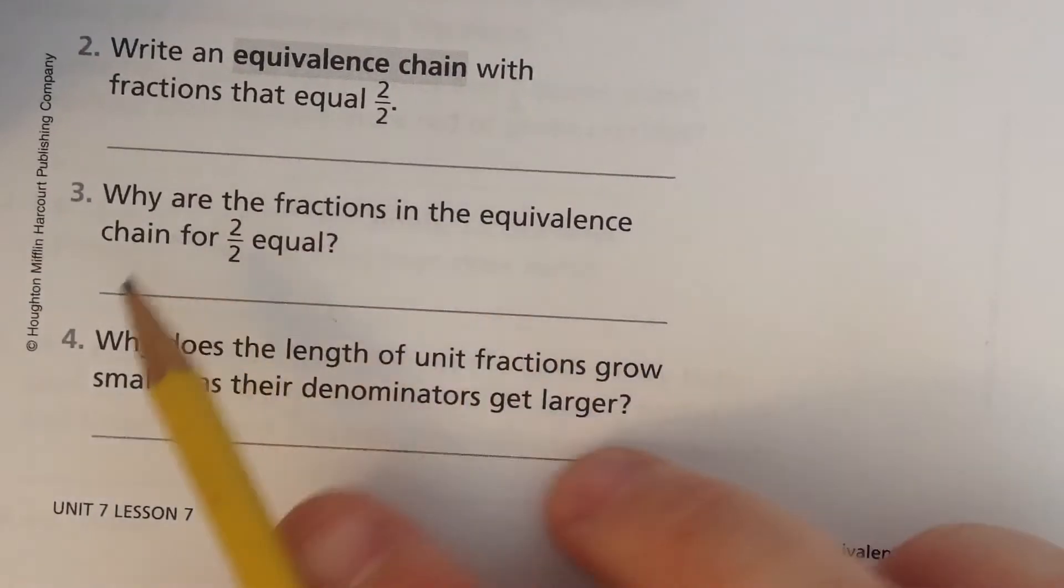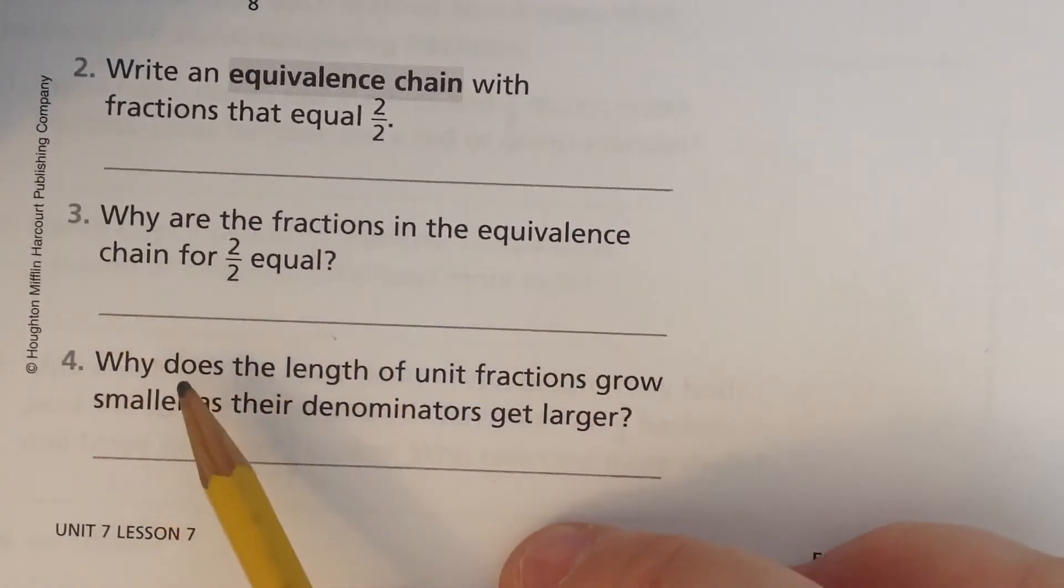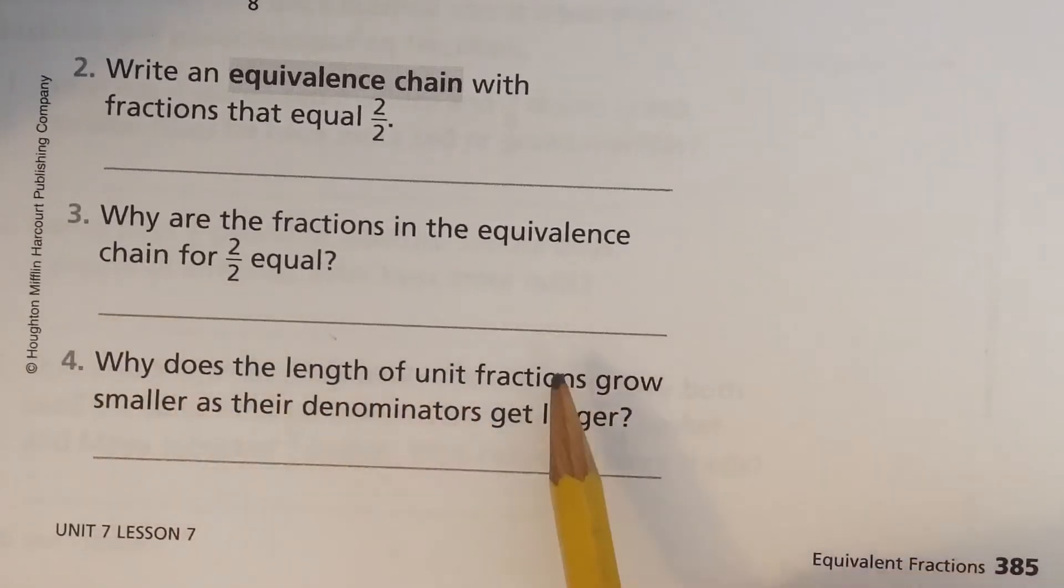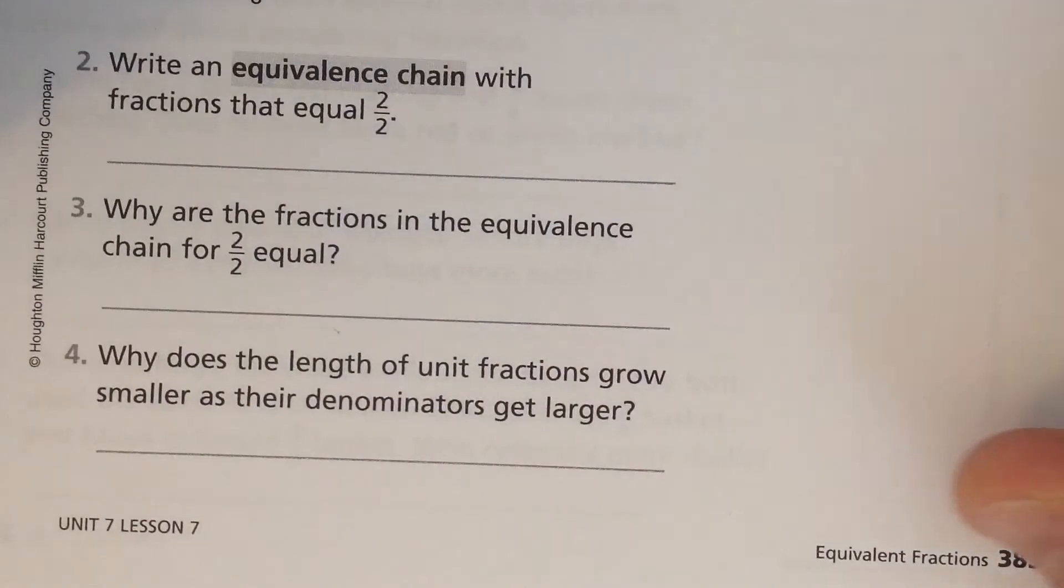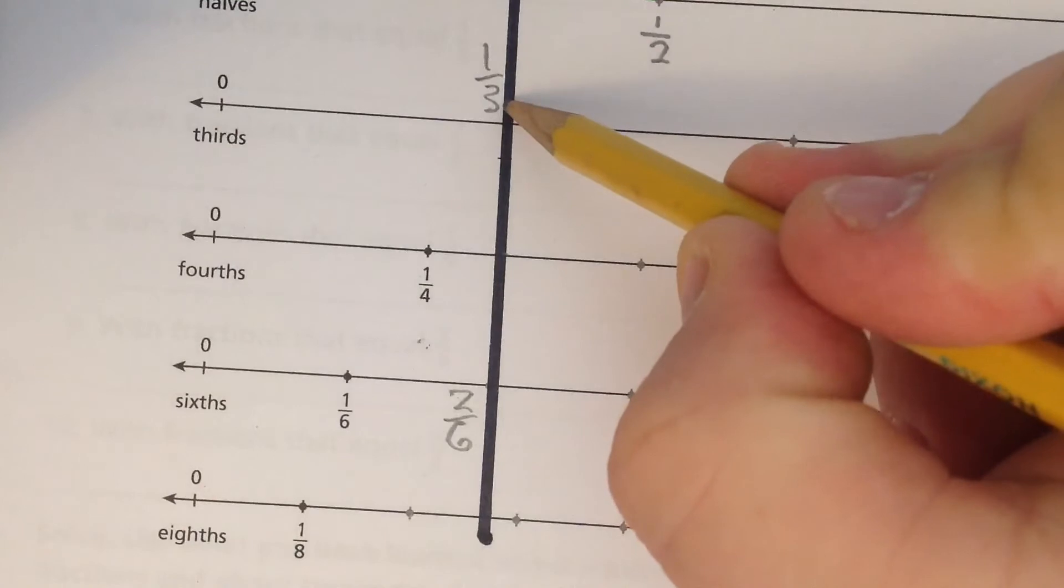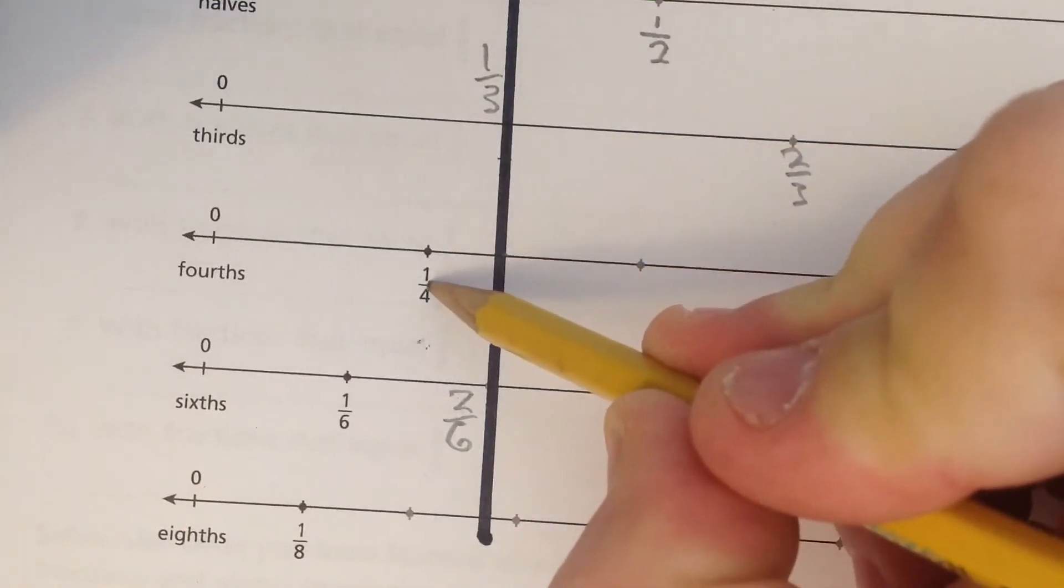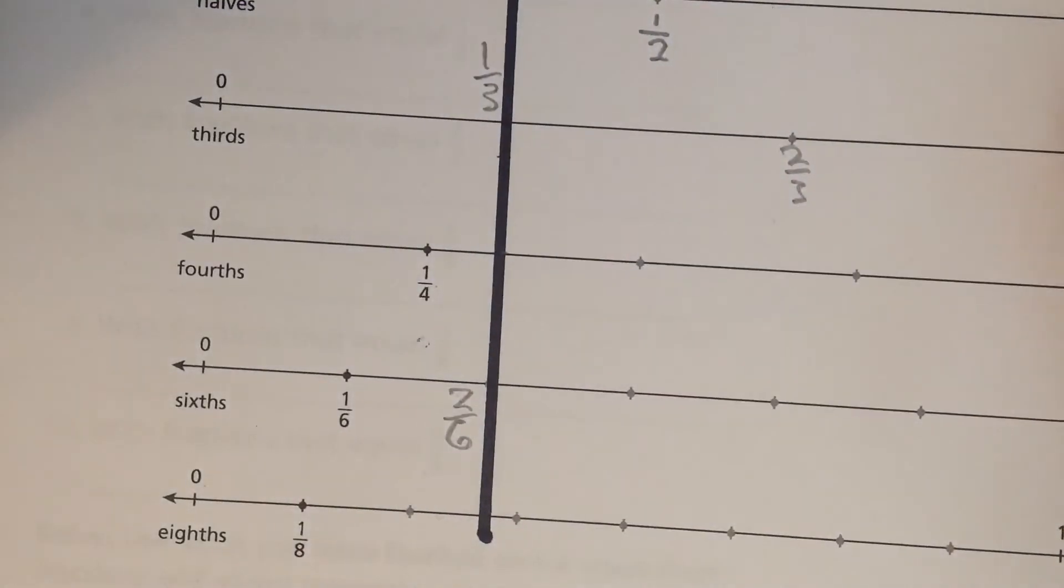Why are the fractions in the equivalence chain for two-halves equal? We'll have to think about that. Why does the length of the unit fraction grow smaller as their denominators get larger? See how every time the bottom number gets bigger, the piece gets a little smaller? Why is that?